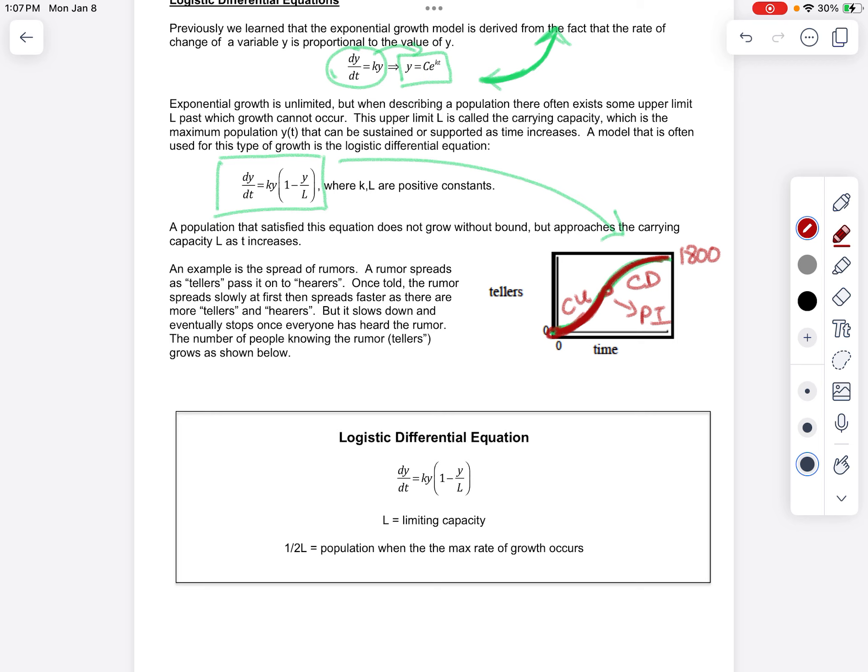And the point of inflection is always going to happen at one half of the carrying capacity. And this 1,800 is the carrying capacity, or sometimes we call that the limiting capacity. What's the biggest number you could possibly get to? So this point of inflection will always occur at one half of that limiting capacity.